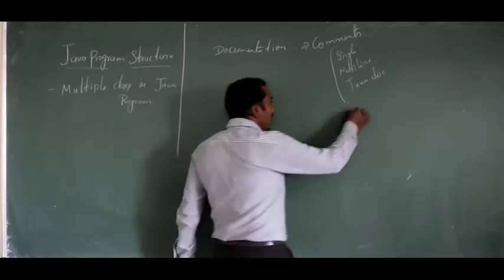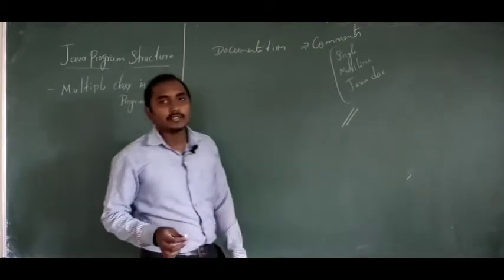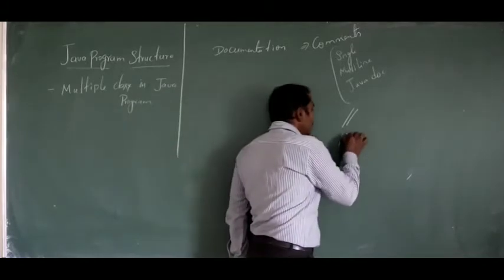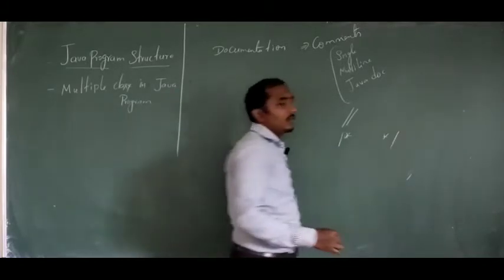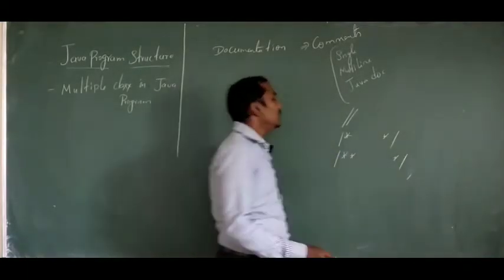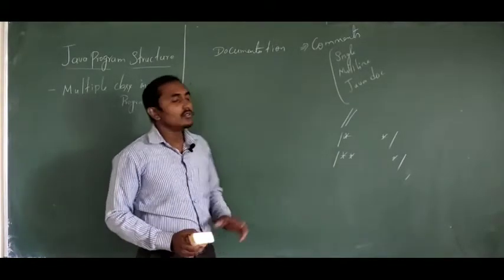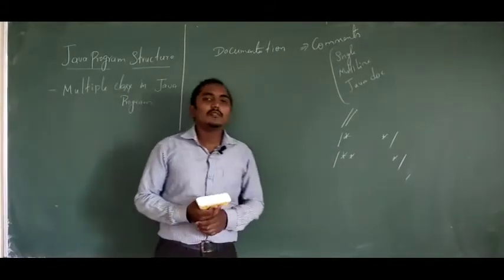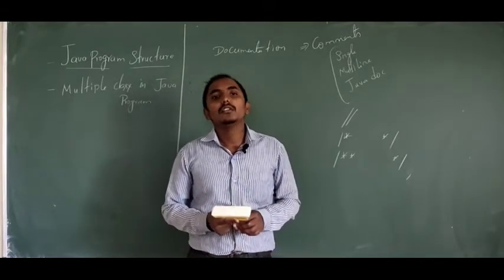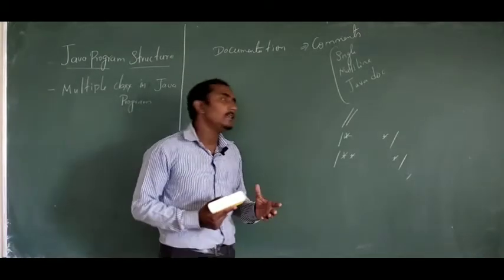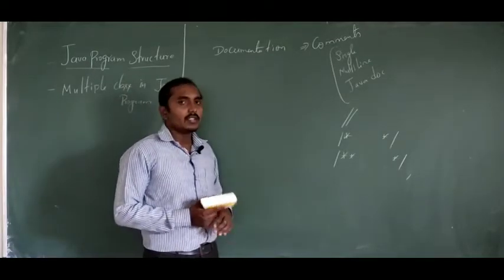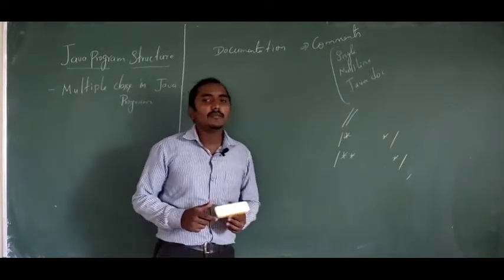For example, I will be using double backslash for representing a single line comment. If you want to use a multi-line comment, we will be using the /* */ symbol. And if you want to make Java-based documents, I will be using the /** */ comment lines for creating documentation. In the documentation section, we have lines of statements which are not for execution — used only for the description of that particular program. So we will have those three types: single line, multi-line, and javadoc.